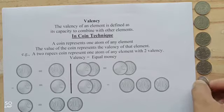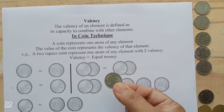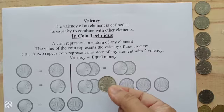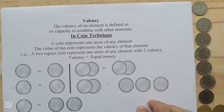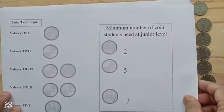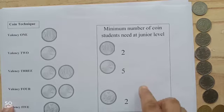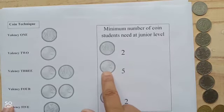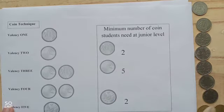For example, this is a 2 rupees coin. This single coin represents one atom of any element with valency 2. This is the concept of valency in the coin technique. Now, in my coin technique, the minimum number of coins students need at the junior level are: 1 rupee coin, 2 rupees coin, and 5 rupees coin.